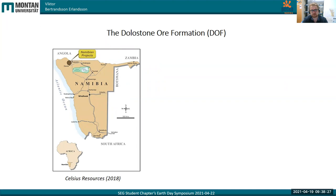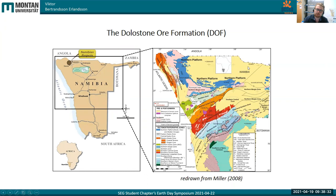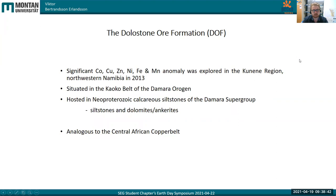My mineralization is the Dulleson ore formation in northwestern Namibia. It's located in the Kaukobelt, which is the northern branch of the Damaran orogenic belt. It's more or less an anomaly or enrichment in copper, cobalt, zinc, nickel, iron, and magnesium, and was first explored in 2013, so it's pretty new. It's situated in the Kaukobelt of the Damaran orogen, hosted in Neoproterozoic calcareous siltstones, dolomites, and even some anchorites — a very iron-rich system. Both the setting and the sediments are coeval and basically an analog to the Central African Copperbelt, where we get our cobalt from.